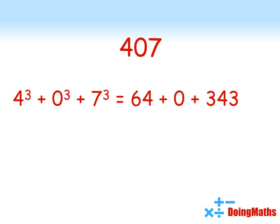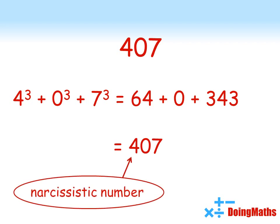Let's try another one. So 407. Again, there are three digits, so we're going to take each of them and cube them. So 4 cubed is 64, 0 cubed is 0, 7 cubed is 343. Add them together, we're back where we started. Another narcissistic number.